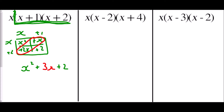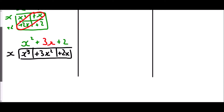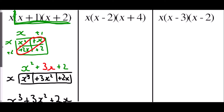Now that is only the end piece - this all has to be multiplied by x. So I add a further grid: x squared times x is x cubed, 3x times x is plus 3x squared, and 2 times x is plus 2x. So when we expand all of that out entirely we get x cubed plus 3x squared plus 2x.